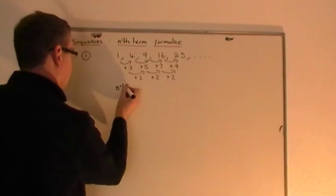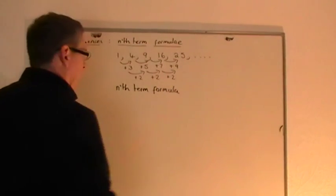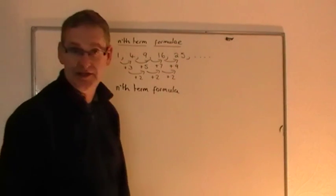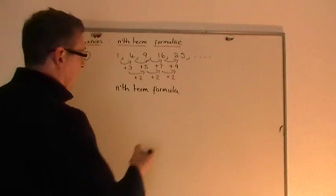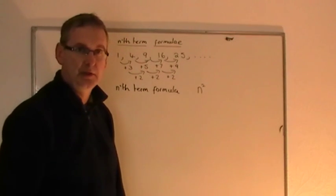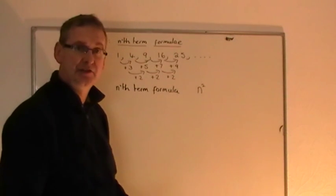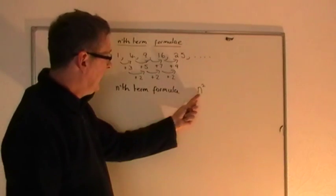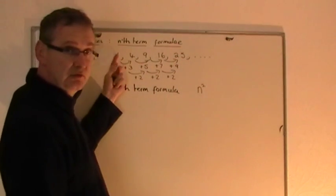So here we go — nth term formula. You learn this: if the second difference is always the same number, in this case plus 2, then the formula you're looking for will have within it an n squared term. So you write down n squared and check it. If n is 1, you get 1 squared, which is 1. That happens to work. But it needs to work for all of them, so let's check the next one. If n is 2, 2 squared is 4 — that's what we've got.